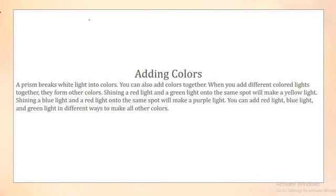Adding colors: a prism breaks white light into colors, but you can also add colors together. When you add different colored lights together, they form other colors. Shining a red light and a green light onto the same spot will make yellow light. Shining a blue light and a red light onto the same spot will make purple light.